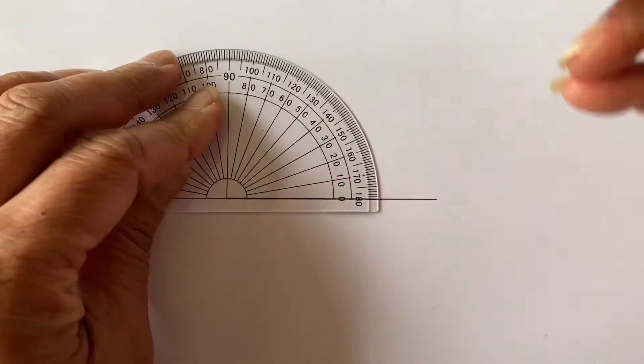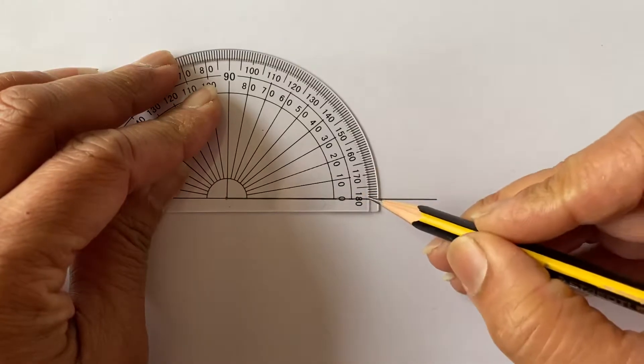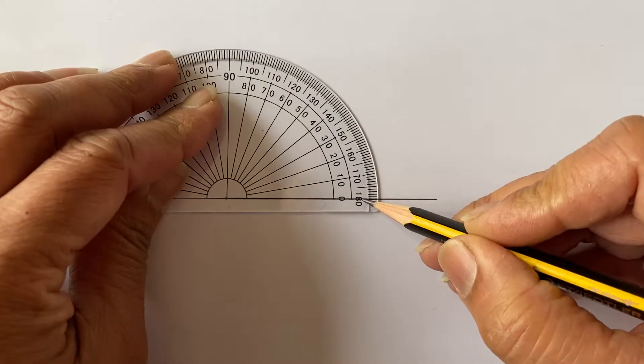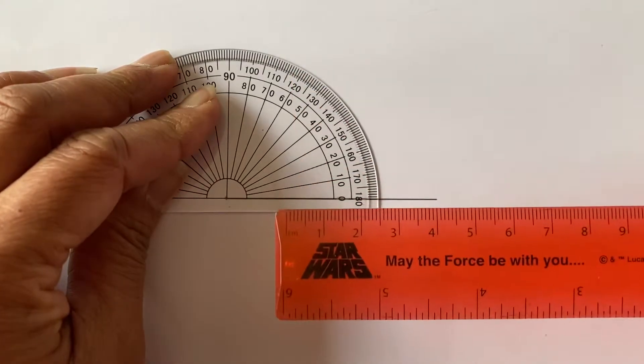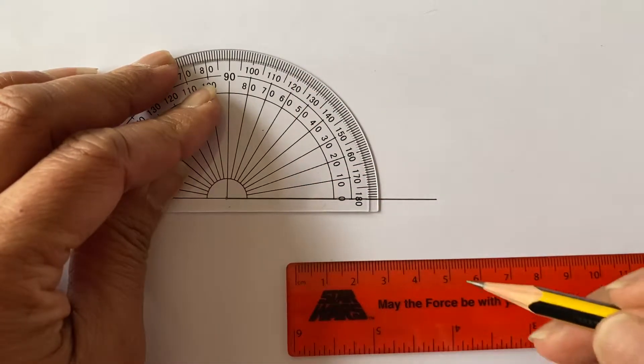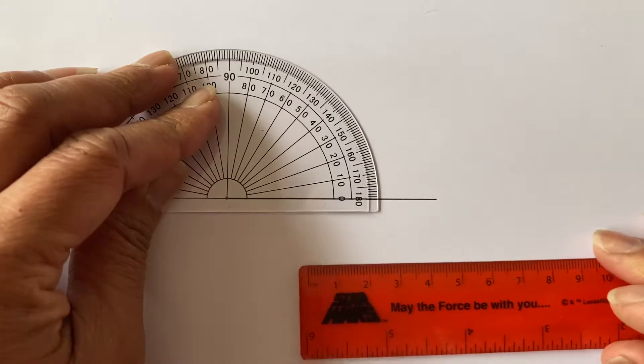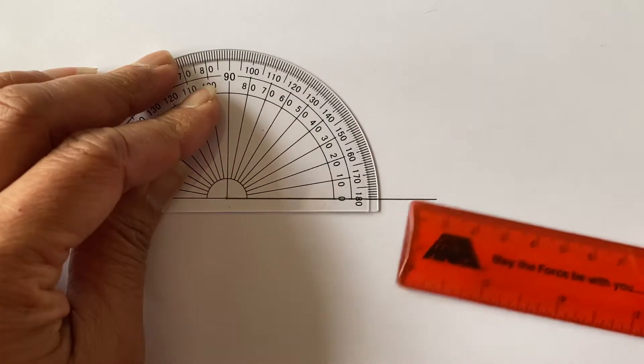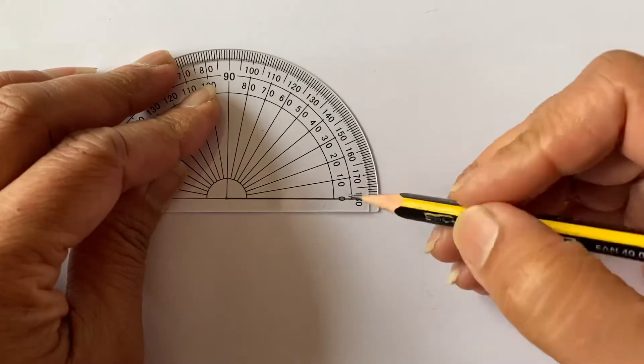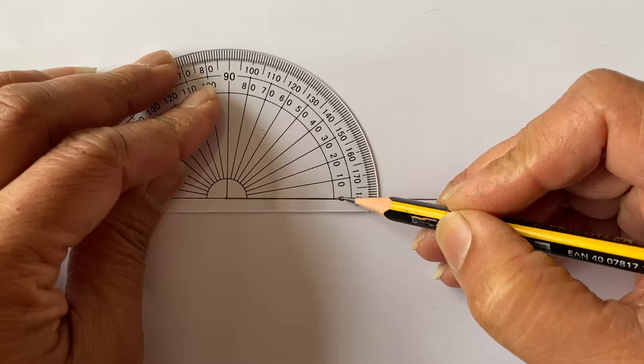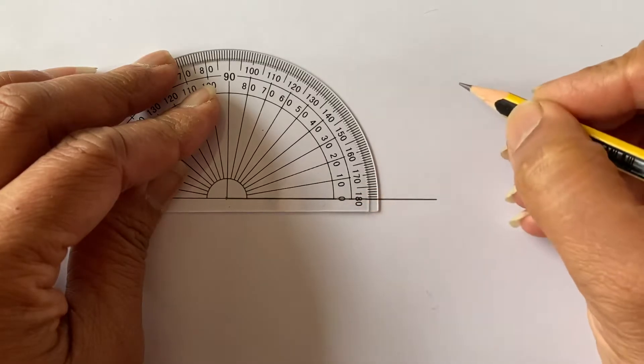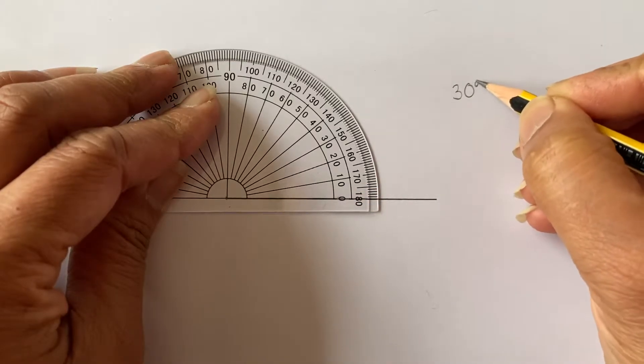Right, so starting from the zero. I'm not going to read from this side because it starts at 180. You wouldn't measure with a ruler and start from five, would you? No, so we need to measure from zero. I'm going to go for 30 degrees.